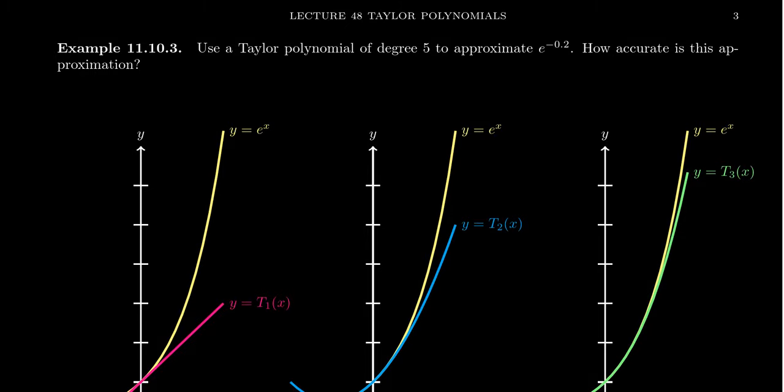In this video, we're going to use a Taylor polynomial to approximate the number e to the negative 0.2. We've decided already that we're going to use the degree 5 Taylor polynomial to approximate it, and we also want to determine how accurate this approximation is.